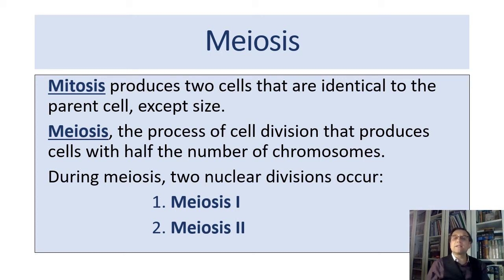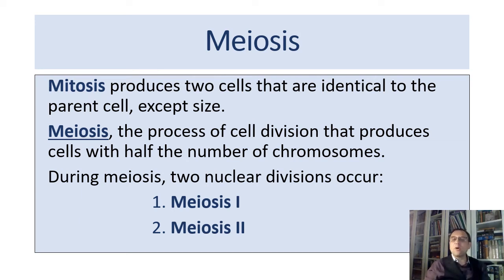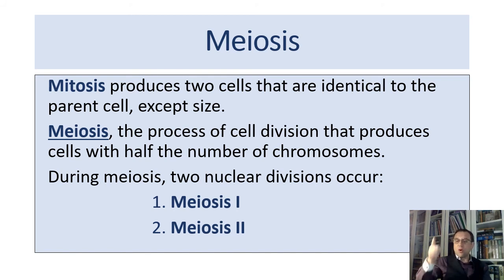We can define meiosis as the process whereby a diploid double set of chromosomes is reduced to a haploid single set in a cell. In diploid organisms, this guarantees that the chromosome number remains stable from generation to generation, and that each sexually reproduced offspring gets two complete sets of genetic instructions — each set being a random mix from the parents. Meiosis involves two nuclear divisions: Meiosis I (with prophase I, metaphase I, anaphase I, and telophase I) and Meiosis II (with prophase II, metaphase II, anaphase II, and telophase II).